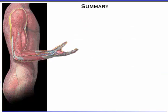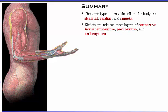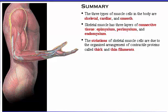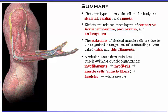Here's a summary of what we've covered. The three types of muscle cells in the body are skeletal, cardiac, and smooth. Skeletal muscle has three layers of connective tissue: epimysium, perimysium, and endomysium. The striations of skeletal muscle cells are due to the organized arrangement of contractile proteins called thick and thin filaments. A whole muscle demonstrates a bundle-within-a-bundle organization, from myofilaments to myofibrils to muscle cells to fascicles to the whole muscle.